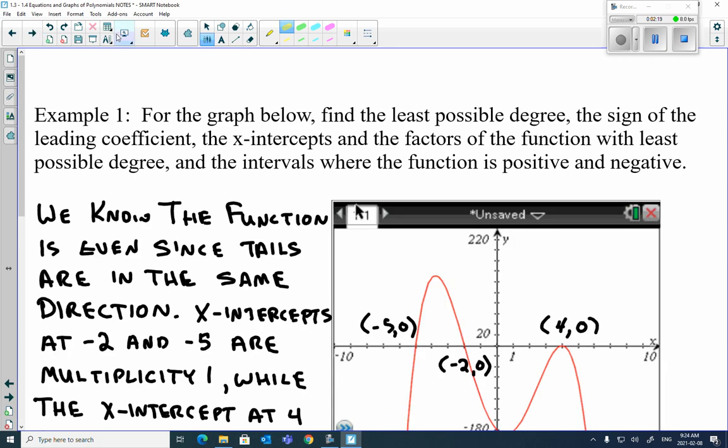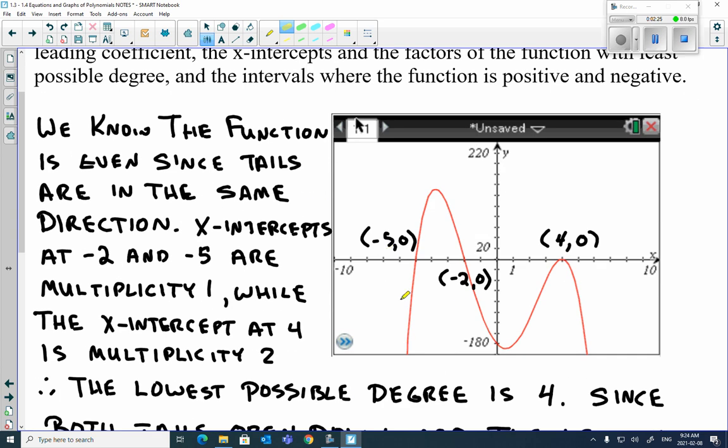So example 1 here. What we have is this is a graph. We want to learn all the different things about this graph. You can see both of them face the same direction. So first off, we know that this function is even since the tails are in the same direction. If it was odd, they'd be different directions.